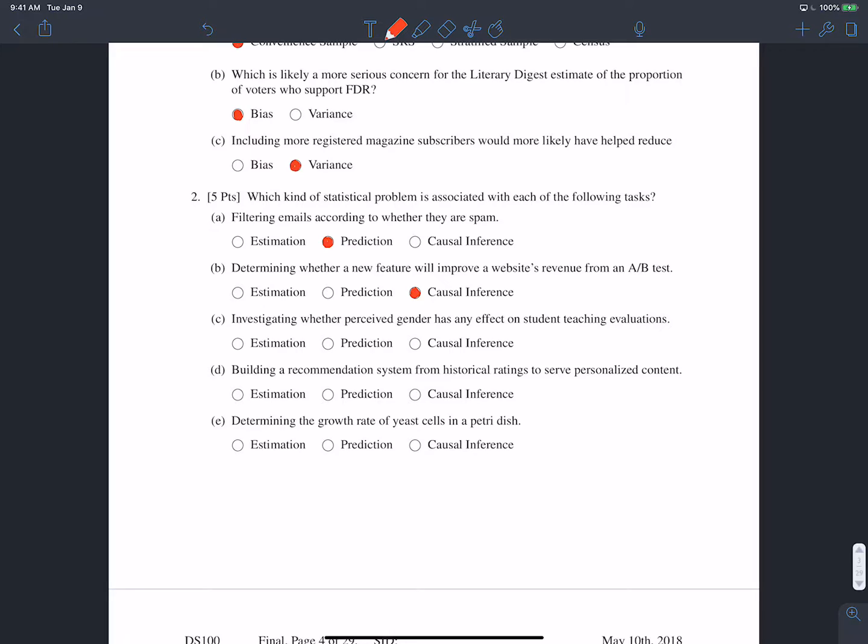And C is very similar. Investigating whether perceived gender has any effect on student teaching evaluations. We're trying to see the impact that gender has on student teaching evaluations. So that's not exactly estimation or prediction, that's causal inference.